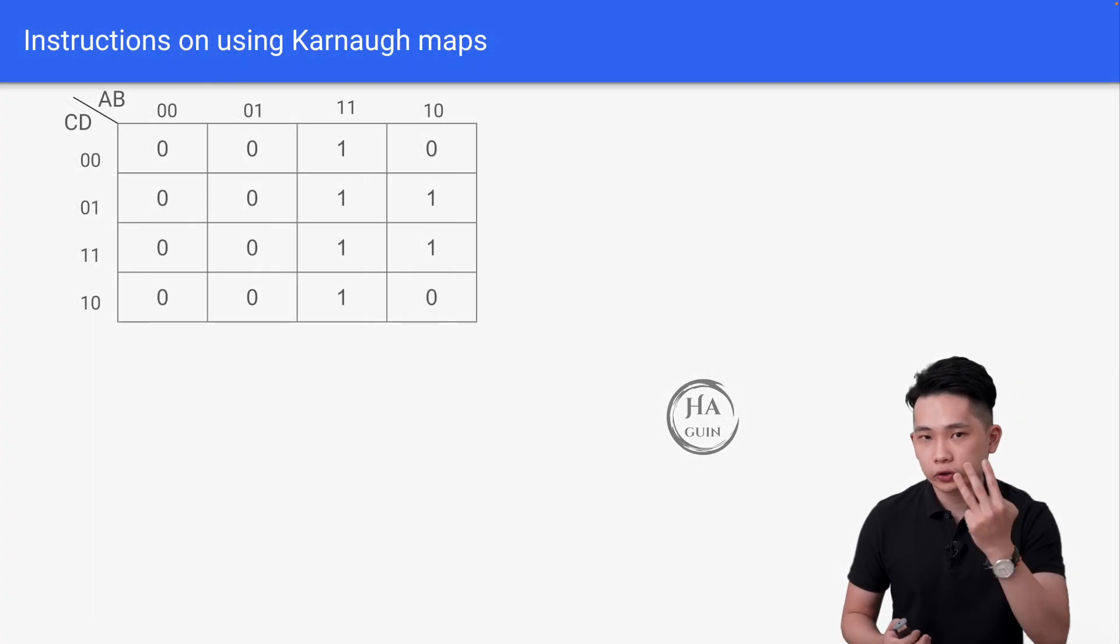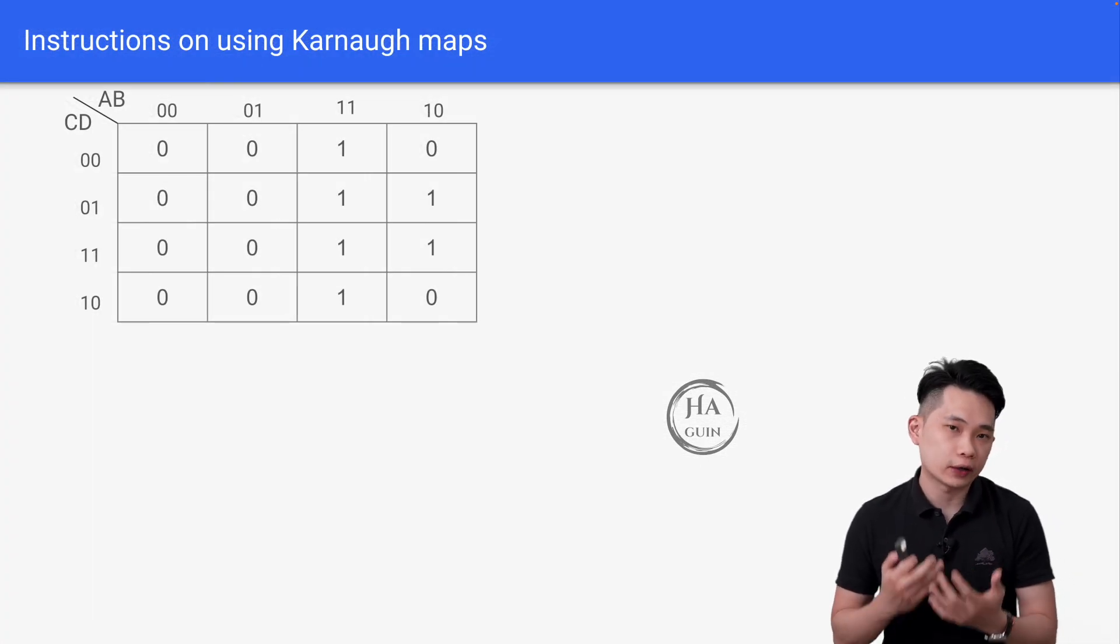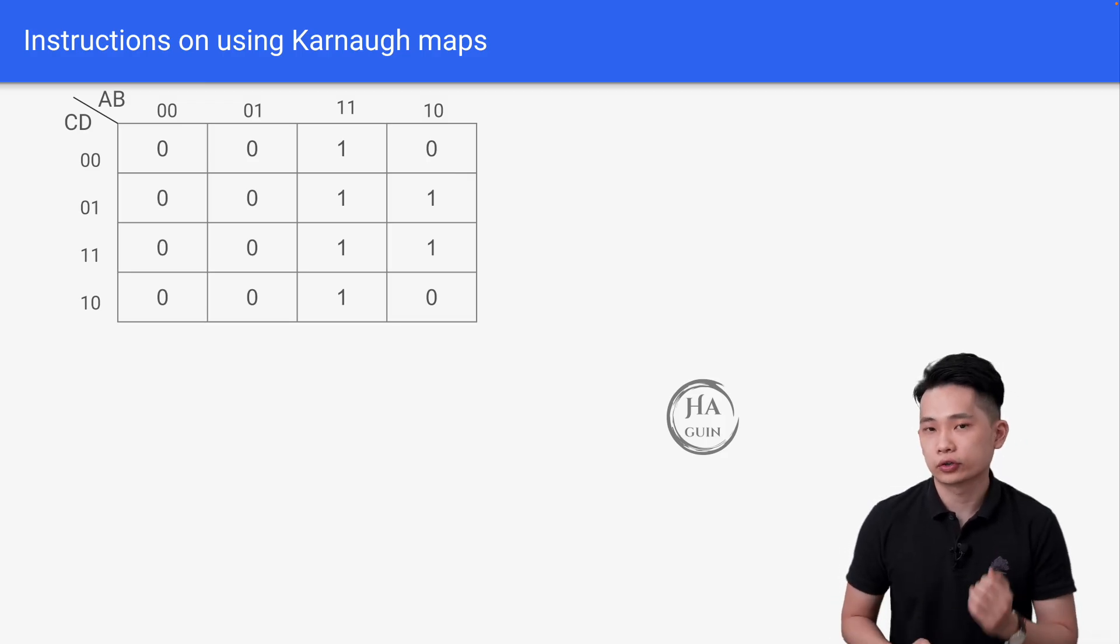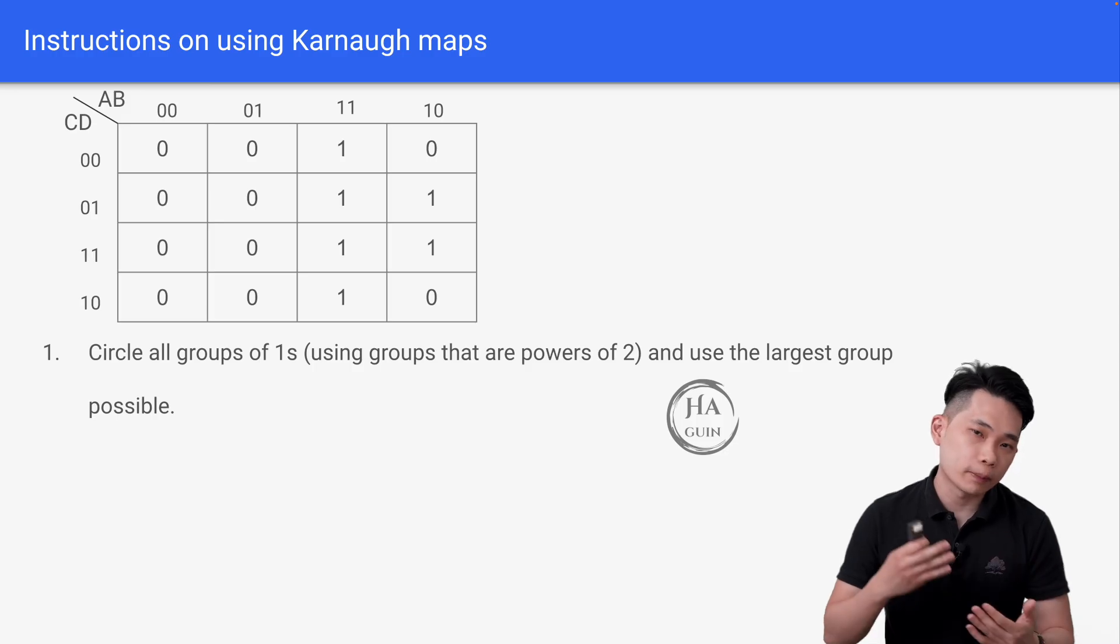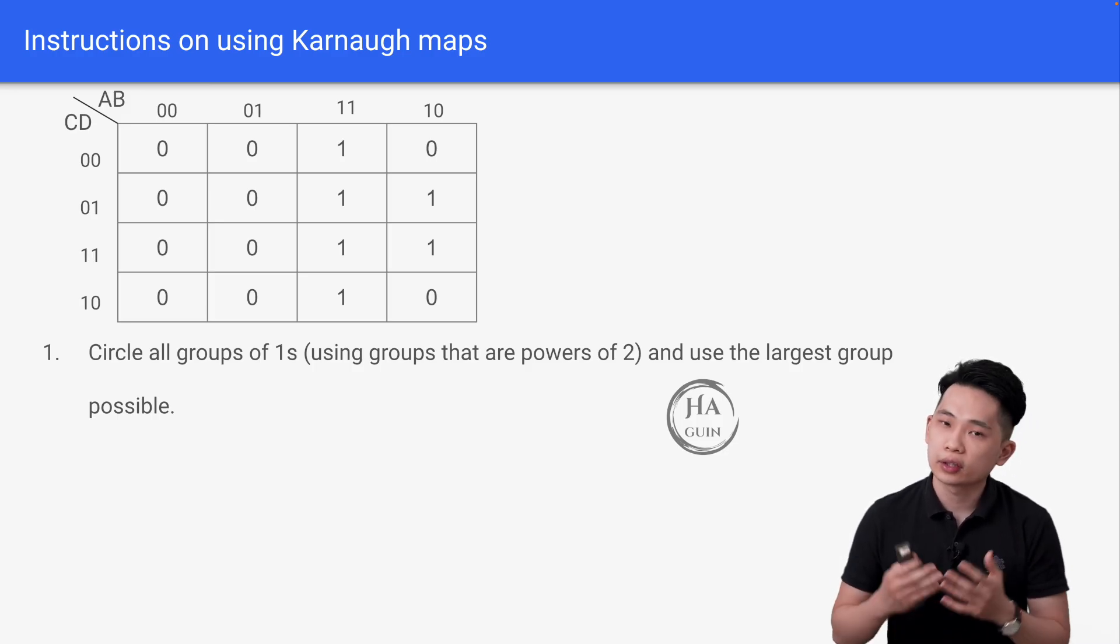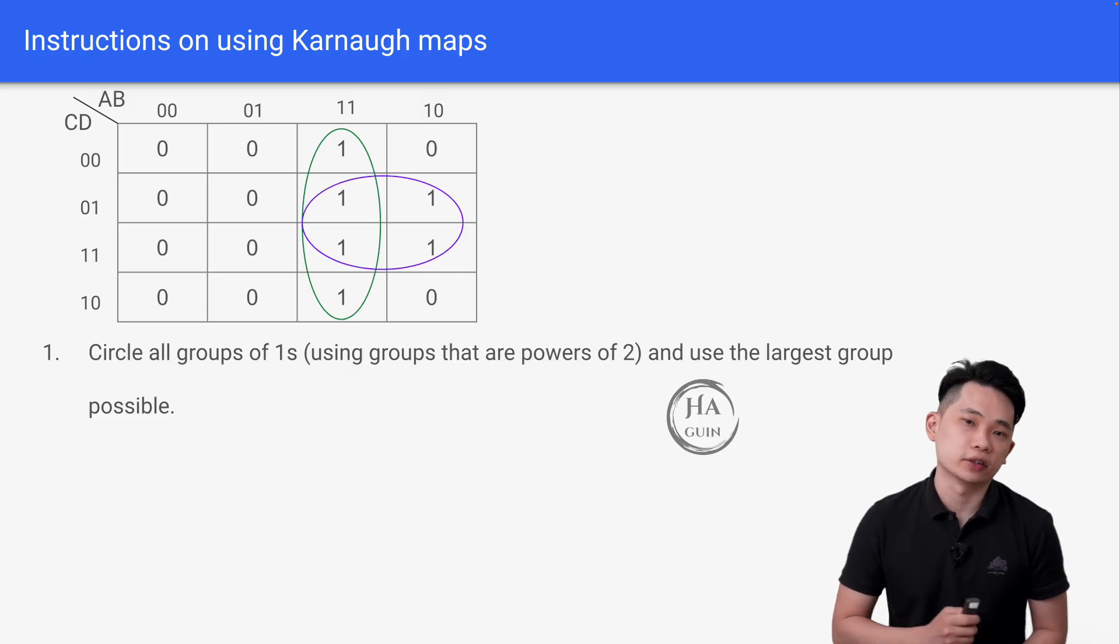Let's look at the simplified 3 steps instructions on using Karnaugh maps. We have a sample truth table here. So step 1, circle all groups of 1s using groups that are powers of 2 and use the largest group possible. So we have one circle here and another circle here.